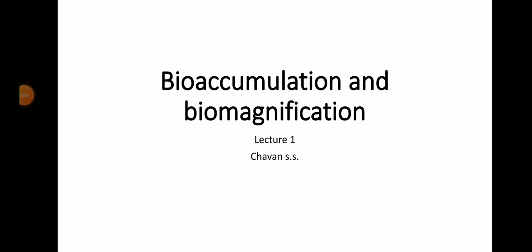Good morning class. In this lecture we are talking about bioaccumulation and biomagnification. Both terms belong to the pollution biology subject, from chapter number seven. These three terms — bioaccumulation, biomagnification, and bioconcentration — all relate to the concentration of pesticides in the food chain, trophic levels, and the fat cells of living organisms.